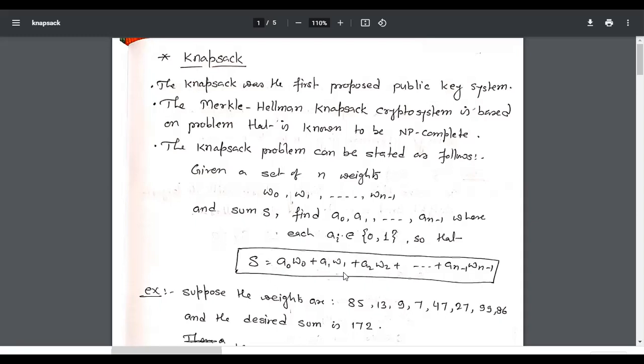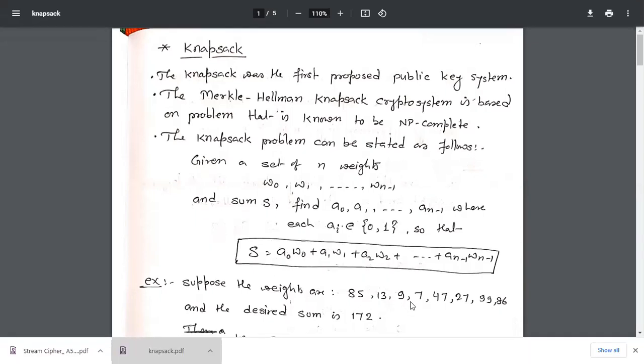For this we consider an example. Suppose the weights are 85, 13, 9, 7, 47, 27, 89, 86 and the given sum is 172.